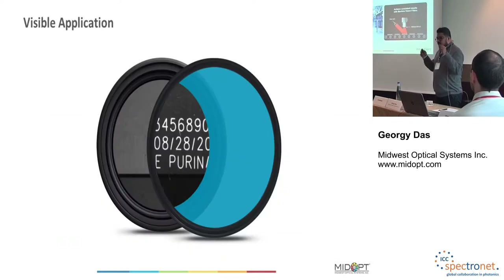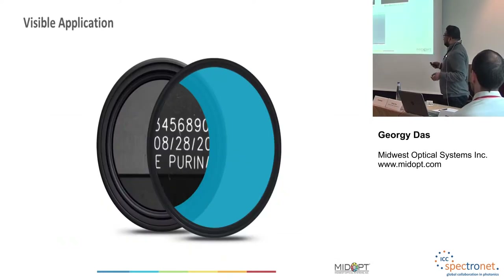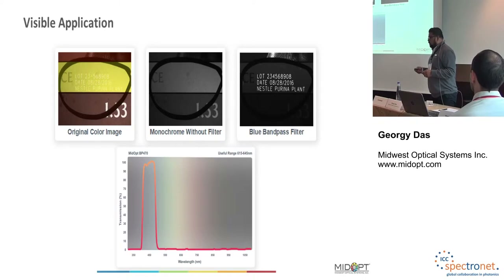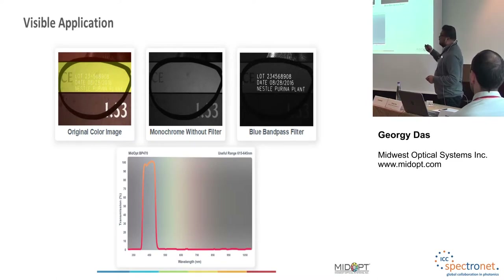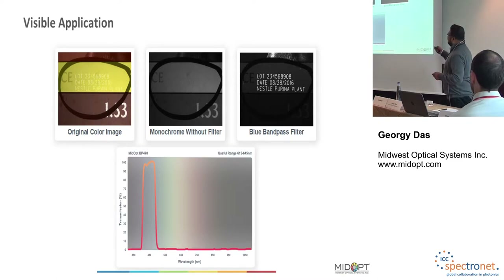Here's another application where a customer was trying to read a white date code. The original color image is really hard to read, and the monochrome image without a filter is also difficult. But using a blue bandpass filter to block the yellow and pass the white writing creates great contrast — a great way to make that readable.